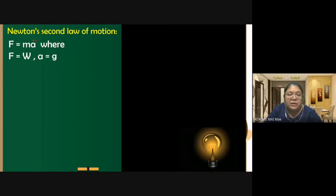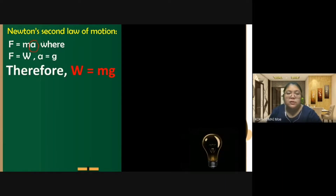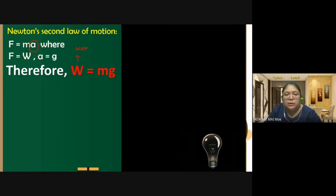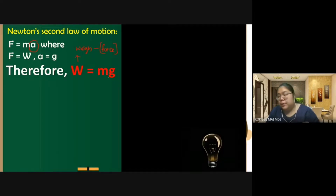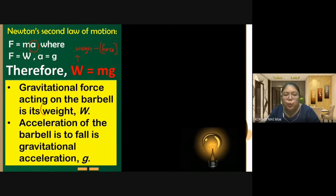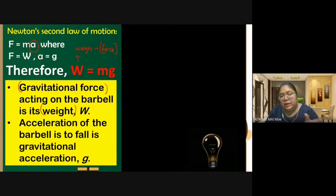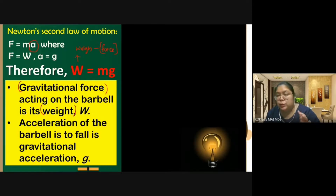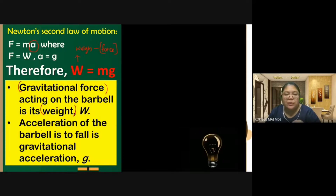Because we are talking about gravitational acceleration, we change 'a' to 'g', so we can write W = mg, where W is weight. Weight is one form of force. The gravitational force acting on the barbell is what we call weight — gravitational force and weight mean the same thing. The acceleration of the barbell as it falls is called gravitational acceleration, represented by g.